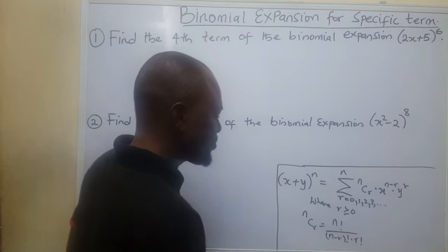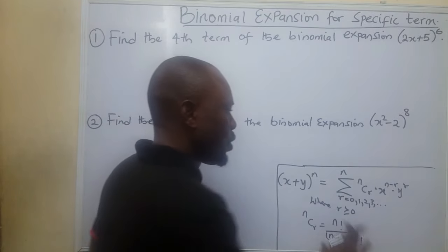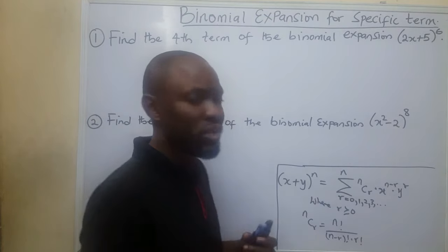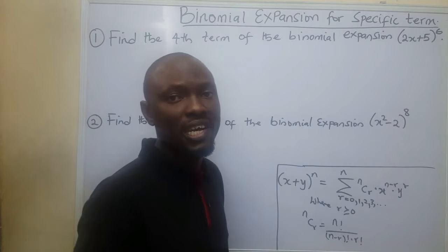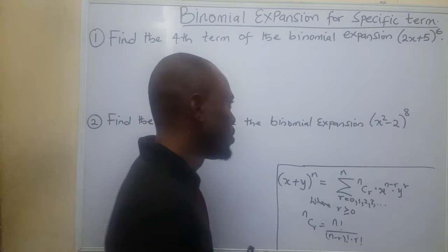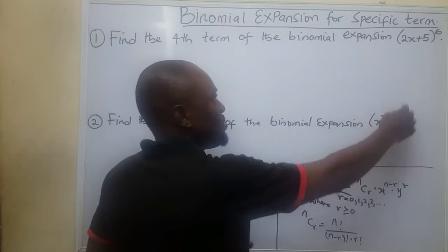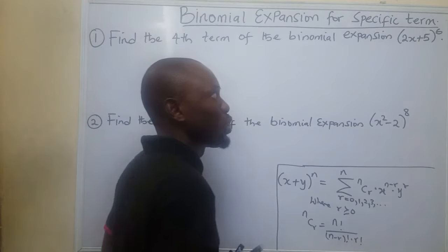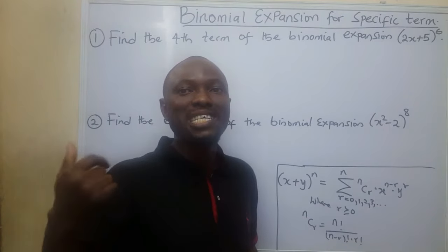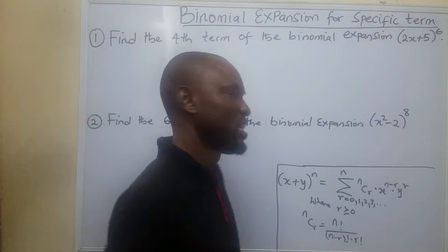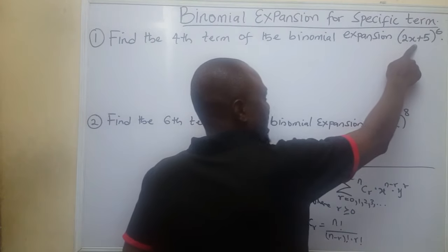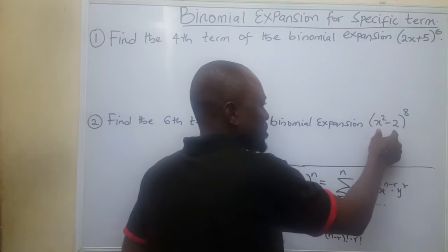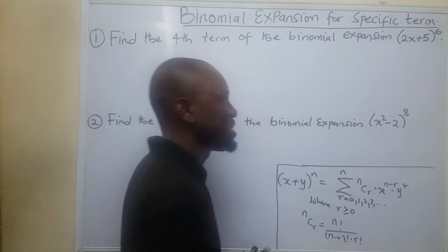Now I'm going to explain all of the terms in this formula and the relationship between n and r. If you look at your binomial, n stands for the highest power of your binomial. So in the first case, the highest power of my binomial is 6, and in the second question, the highest power of my binomial is 8.